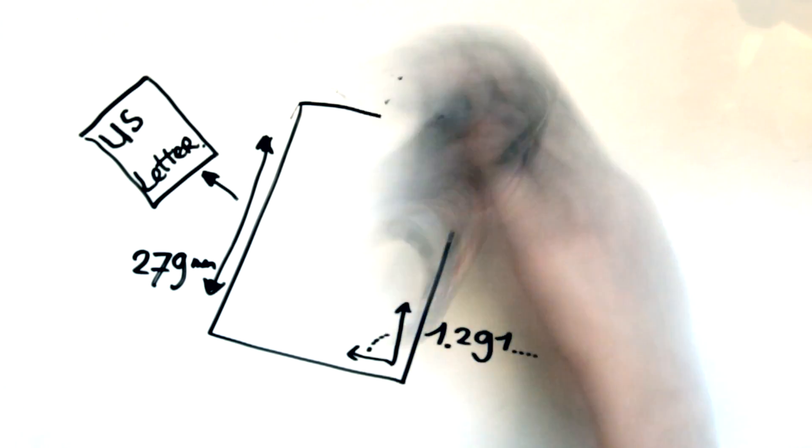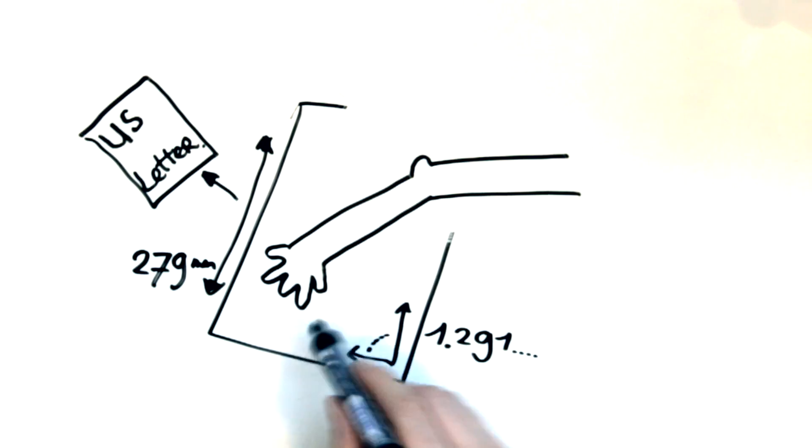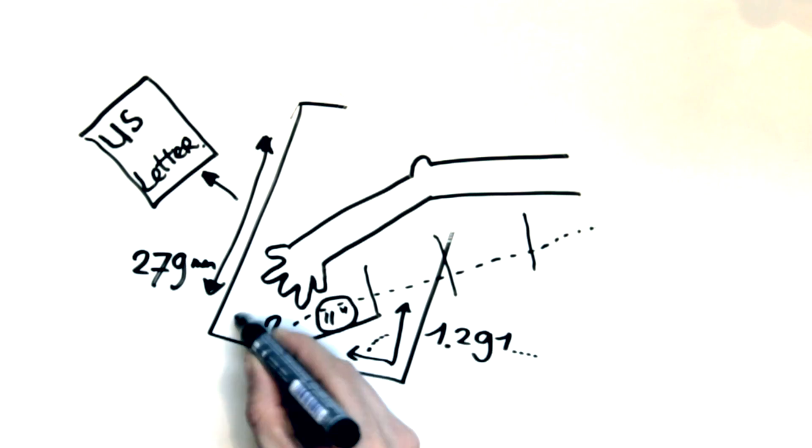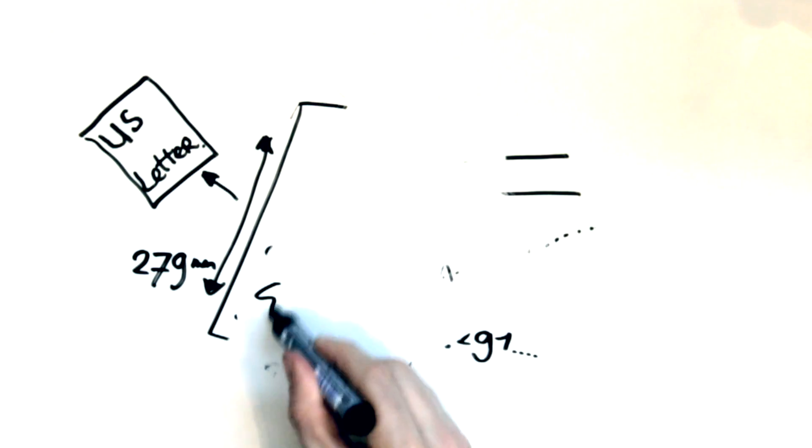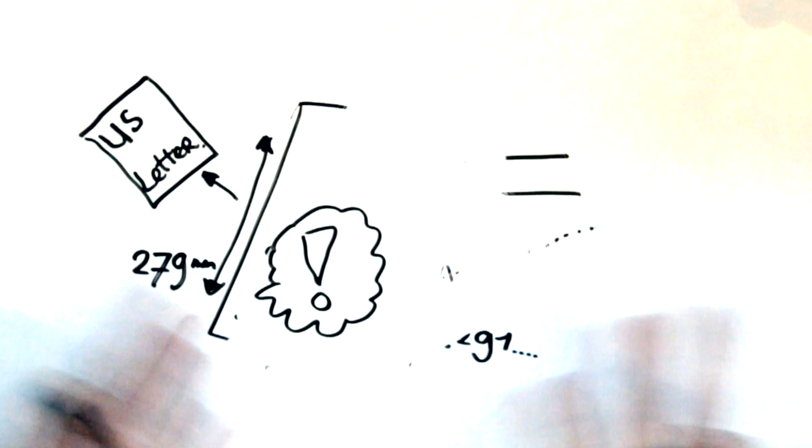The origin of this format is pretty vague and mostly lost in history. Wikipedia says the 11 inch length is about a quarter of the average maximum stretch of an experienced wet arm. So yeah, basically US Letter is a standard because it became a standard. Don't ask questions, just deal with it.